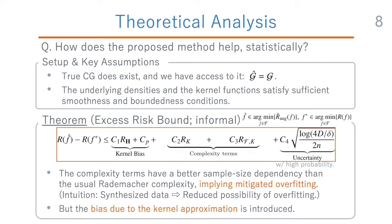The bias term stems from the kernel approximation used in the proposed method, and the complexity terms are the interesting part here. The complexity terms are based on the Rademacher complexity, and they show better dependencies on the sample size compared to the usual Rademacher complexity appearing in the theoretical guarantee for the usual empirical risk minimization.